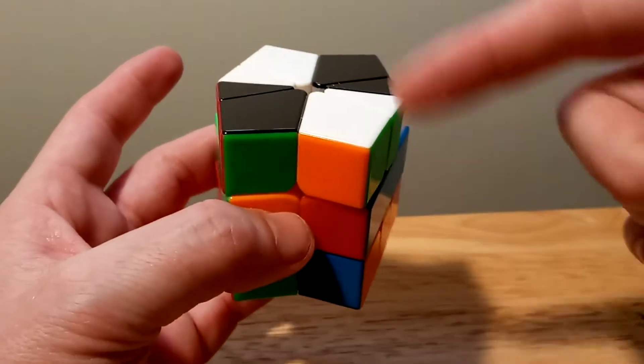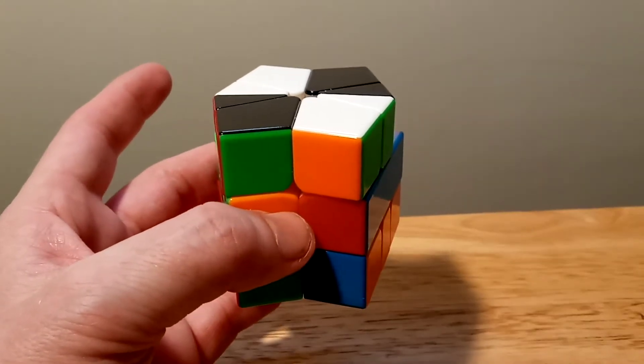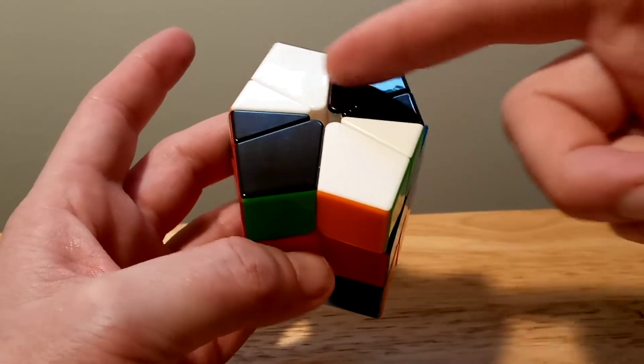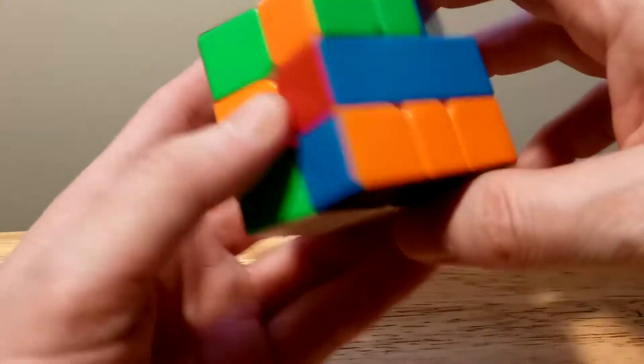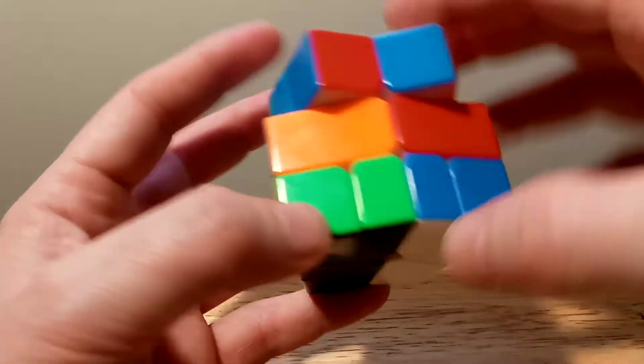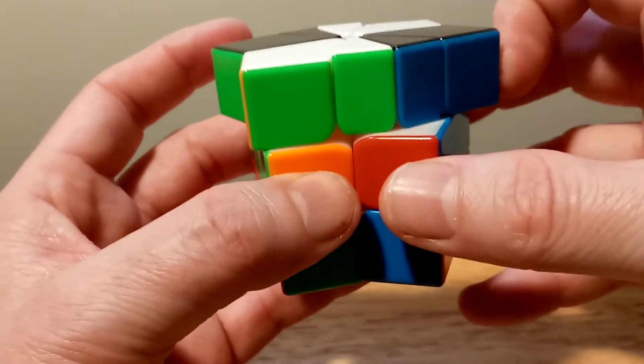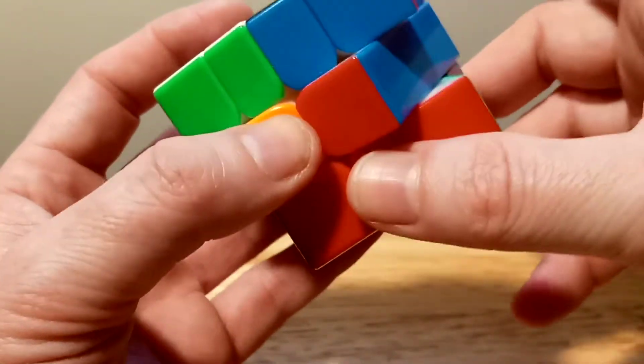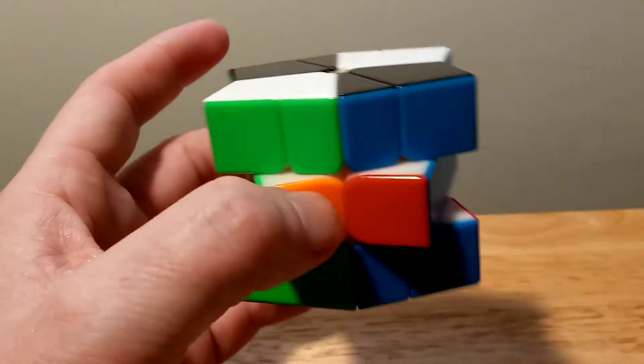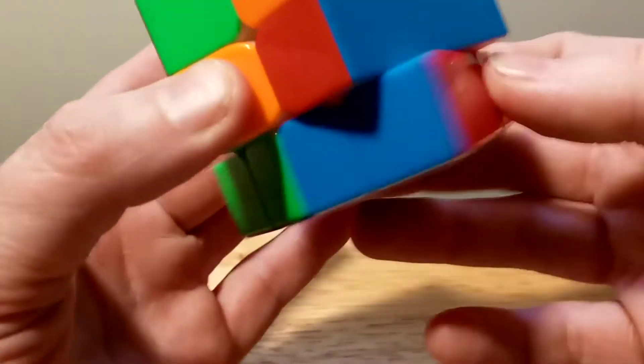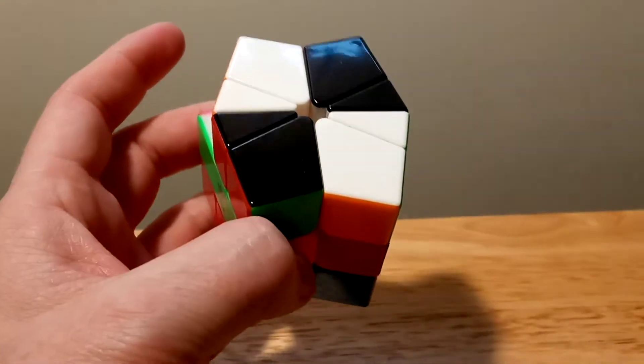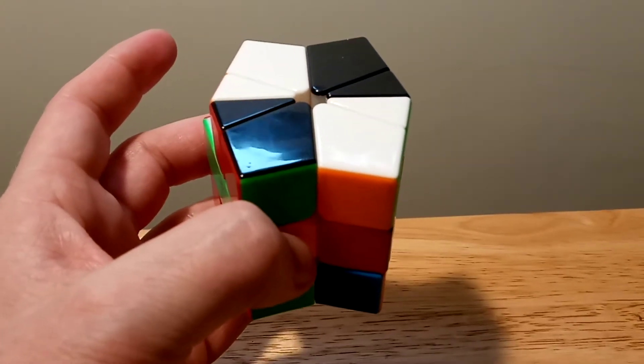sometimes when you're scrambling up the puzzle you'll run into this case where you'll have the barrel on top and on the back you'll have these two like this. But it may not look like that - it might be something like this and this piece is over here. This is how you can recognize a shortcut to cut